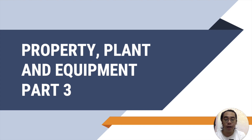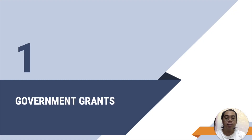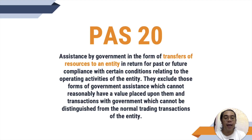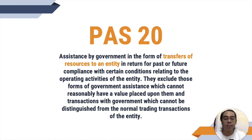This is the third part of property, plant and equipment and this video will focus on government grants. Government grants are governed by PAS 20 and it is defined as assistance by government in the form of transfers of resources to an entity in return for past or future compliance with certain conditions relating to the operating activities of the entity. They exclude those forms of government assistance which cannot reasonably have a value placed upon them and transactions with government which cannot be distinguished from the normal trading transactions of the entity.